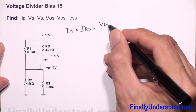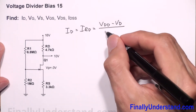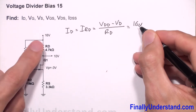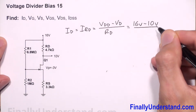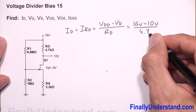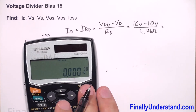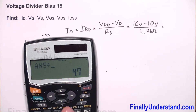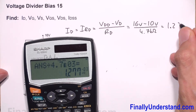Where VDD equals 16 volts, minus VD which is 10 volts, over RD which is 4.7 kilohms. So that is (16 - 10) divided by 4.7 × 10³, which equals 1.27 milliamps. This is our drain current ID.